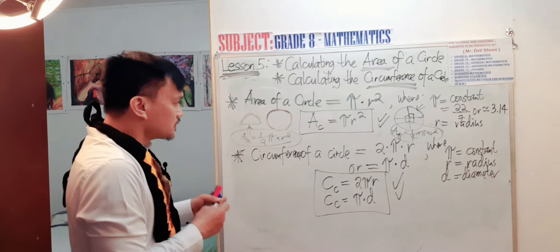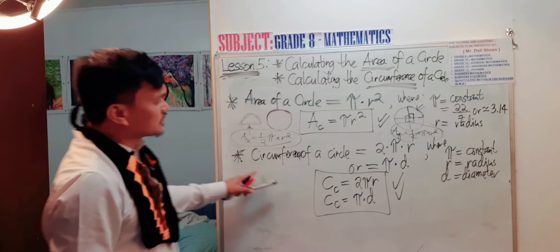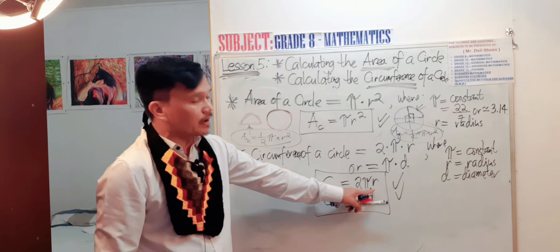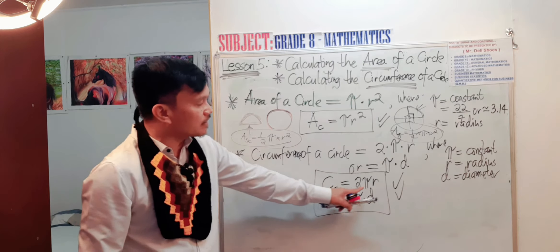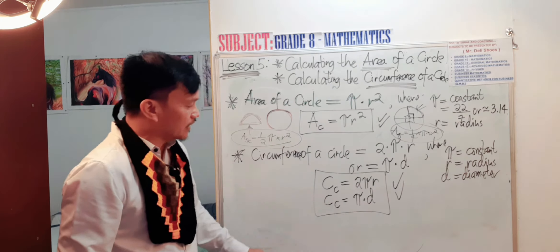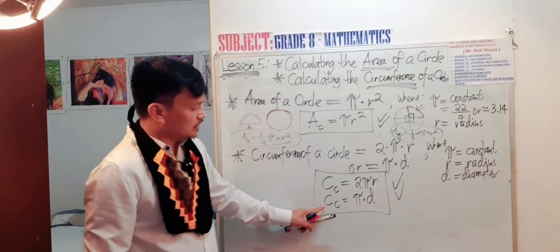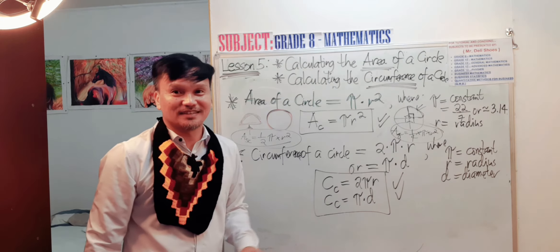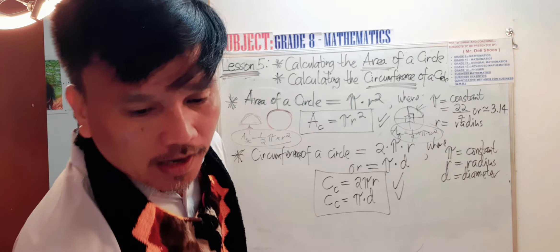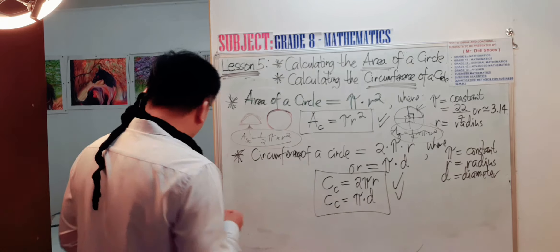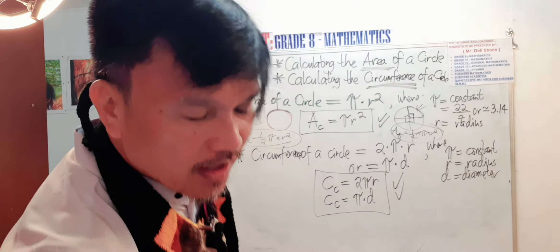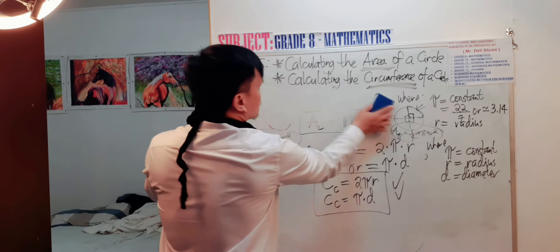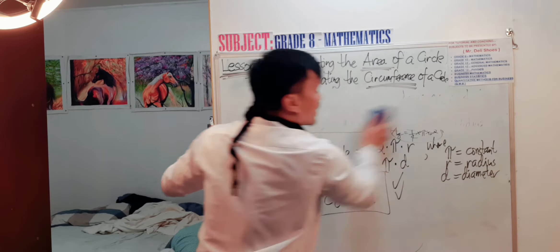Similarly for calculating the circumference of a circle, you use the formula two pi r when the radius is given, and pi times the diameter when the diameter is given. Before we calculate, I want you to first familiarize yourself on the parts of the circle.